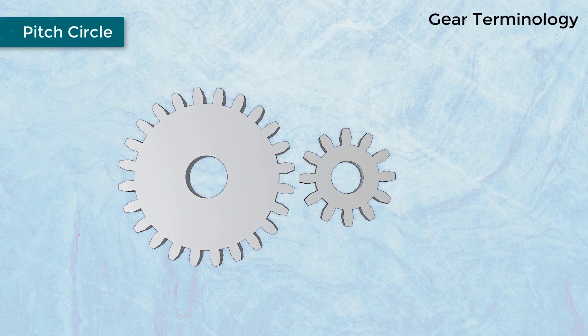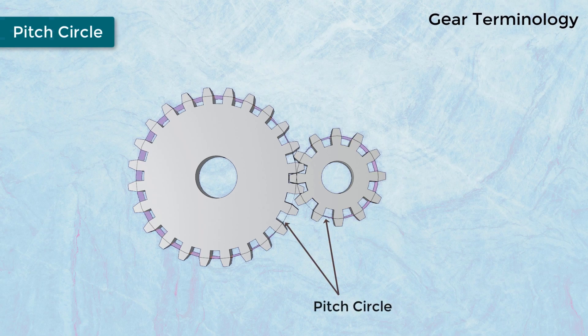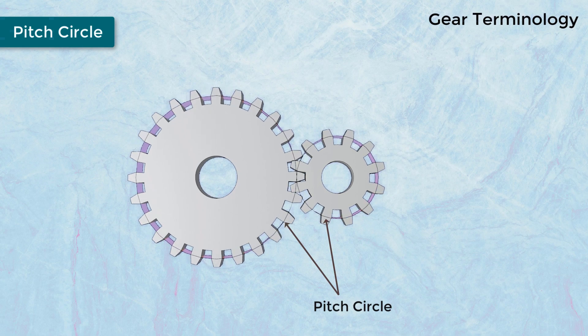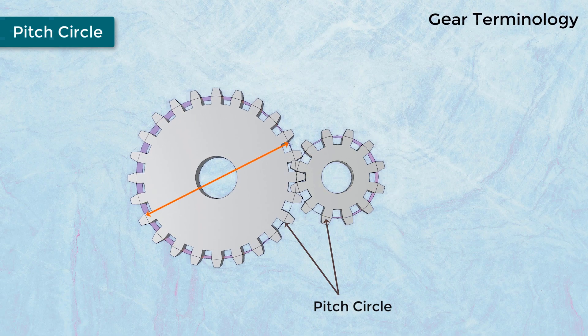Pitch Circle: A pitch circle is an imaginary circle which, by pure rolling action, will give the same rotation as an actual gear. The motion of two meshing gears is described by their pitch circles' motion. The diameter of this pitch circle is called the pitch circle diameter.